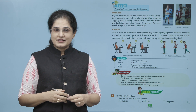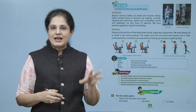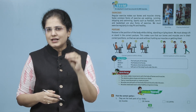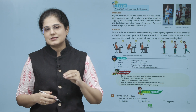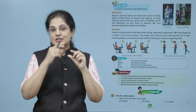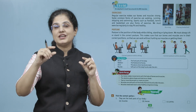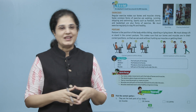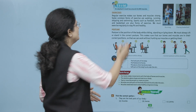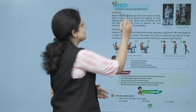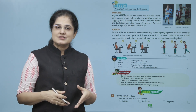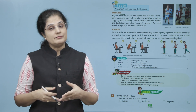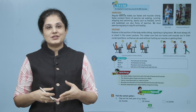It is a fact: an elephant's trunk has around 40,000 muscles. ہاتھی کی جو سونڈ ہوتی ہے اس میں 40,000 muscles ہوتے ہیں۔ Now let us look at exercises. Regular exercise makes our bones and muscles strong.